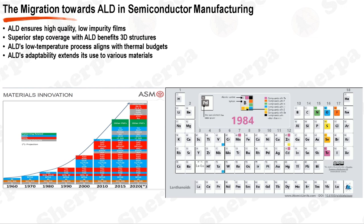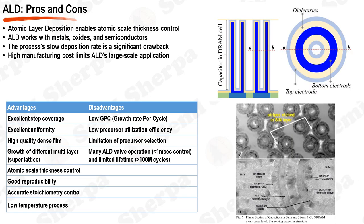Atomic layer deposition, ALD, is a thin film deposition technique that has unique advantages but also certain challenges. One of the primary advantages of ALD is the atomic scale control it offers over film thickness. This is achieved through self-limiting reactions, which ensure a uniform deposition rate regardless of the precursor concentration, allowing for layer-by-layer deposition resulting in films with excellent thickness uniformity.